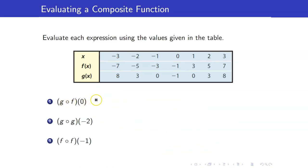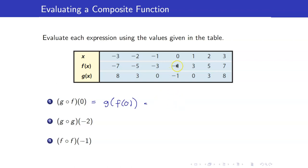g circle f of 0 is g of f of 0. Let's look at the row for f of x when x is equal to 0. f of 0 is negative 1, and from the row for g, g of negative 1 is equal to 0.